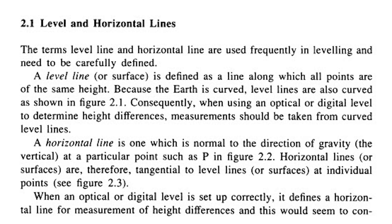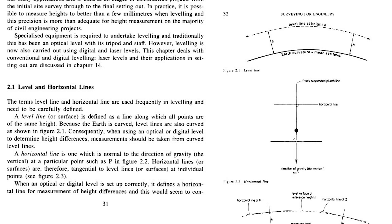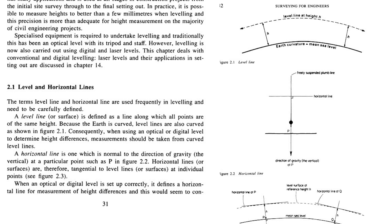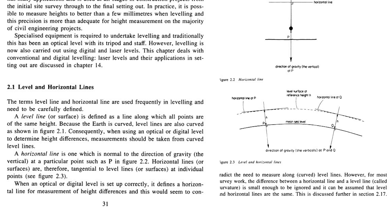Section 2.1: Level and Horizontal Lines. The term level line and horizontal line are used frequently and need to be carefully defined. A level line or surface is defined as a line along which all points are the same height. Because the Earth is curved, level lines are also curved, as shown in figure 2.1. Consequently, when using optical or digital levels to determine height differences, measurements should be taken from curved level lines. A horizontal line is one which is normal to the direction of gravity — the vertical — at a particular point, such as P in figure 2.2. Horizontal lines or surfaces are therefore tangential to level lines or surfaces at individual points.